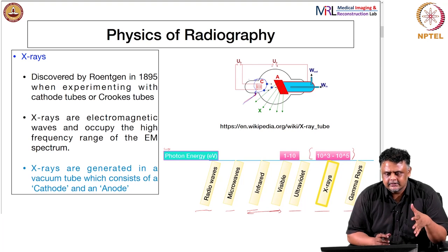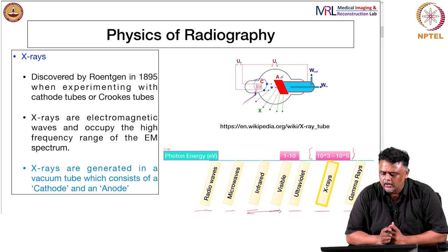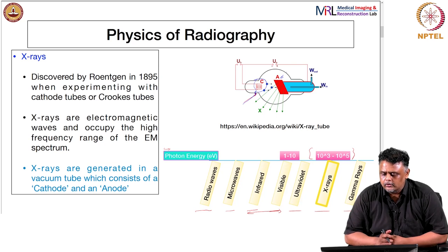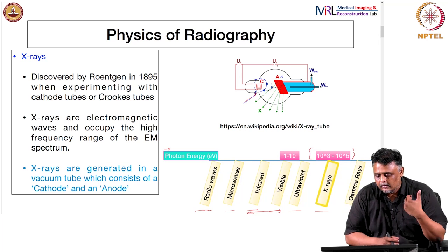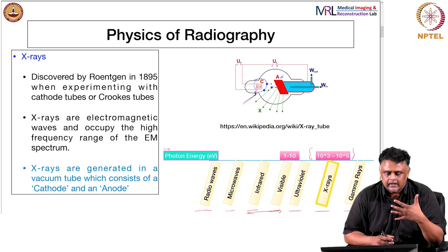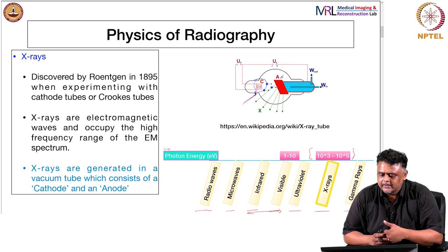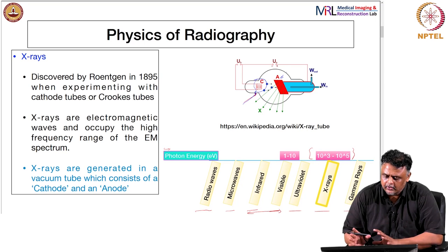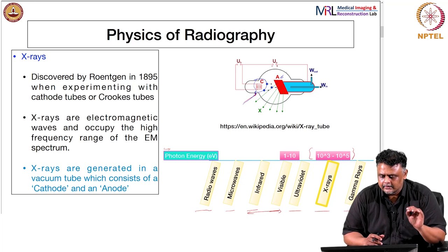These electrons are accelerated by a potential difference across the tube to strike the anode target, which is typically coated with tungsten or other high-Z materials. As electrons hit the anode target, they penetrate it and emit energy in several forms. The electrons are absorbed by the anode, and the process results in the emission of x-rays. Modern tubes have various modifications for more efficient imaging, but this is the basic construction of an x-ray tube.